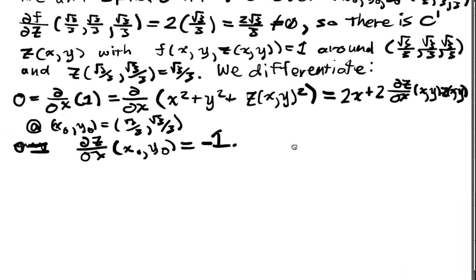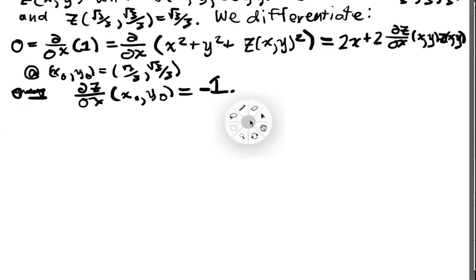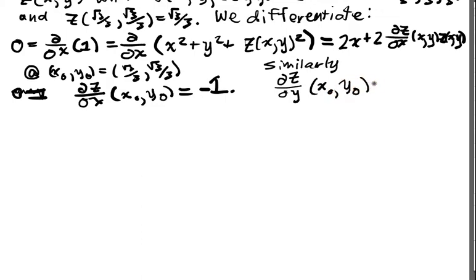And similarly, this means that I can recover derivatives without having to actually know the function, which is sometimes more convenient. So similarly, we've got that dz/dy of x₀, y₀ is also equal to negative 1, because everything is symmetric in the way we chose our point.